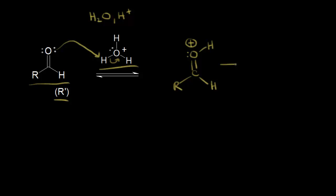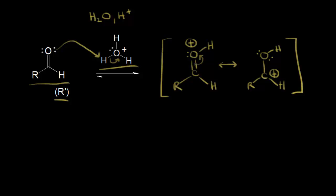We could draw a resonance structure for this — showing these pi electrons moving off onto the oxygen. This top oxygen would now have two lone pairs of electrons. Taking a bond away from the carbon gives it a plus one formal charge. These pi electrons move out onto that oxygen, giving the carbonyl carbon a full positive charge in this resonance structure. This makes your carbonyl carbon more electrophilic, meaning a nucleophile can attack it better. Acid catalysts work by making your carbonyl carbon more electrophilic, which makes it more reactive in a nucleophilic addition reaction.